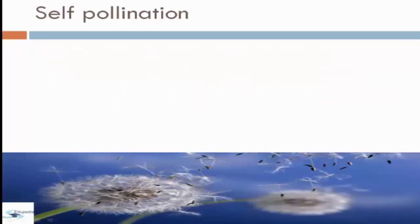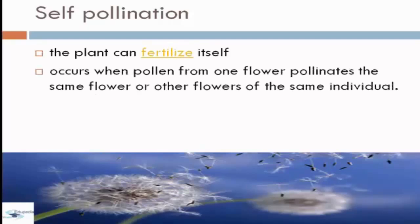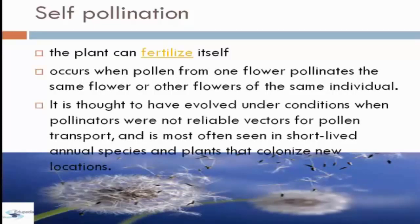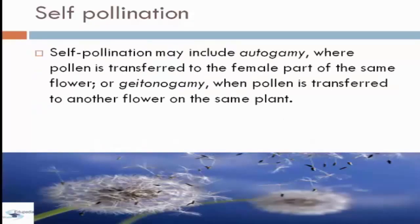Let's discuss now self-pollination. When you say self-pollination, the plant can fertilize itself. It occurs when pollen from one flower pollinates the same flower or other flowers of the same individual. It has evolved under conditions when pollinators were not reliable vectors for pollen transport, and is most often seen in short-lived annual species and plants that colonize new locations. Self-pollination may include autogamy, where pollen is transferred to the female part of the same flower, or geitonogamy, when pollen is transferred to another flower on the same plant.